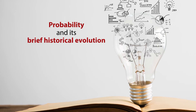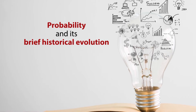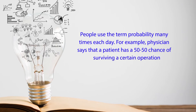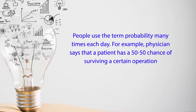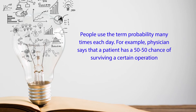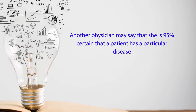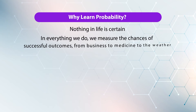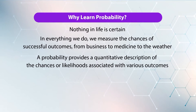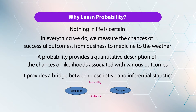Probability theory provides us with the means to arrive at precise expressions for taking care of uncertainties involved in different situations. This unit starts with the meaning of probability and its brief historical evolution, because to understand probability we have to see the genesis behind it — why probability was created and what is the purpose behind using the term. People use the term probability many times each day. For example, a physician says that a patient has a 50-50 chance of surviving a certain operation, or another physician may say she is 95% certain that a patient has a particular disease. Probability provides a quantitative description of chances or likelihood associated with various outcomes, and it provides a bridge between descriptive and inferential statistics.